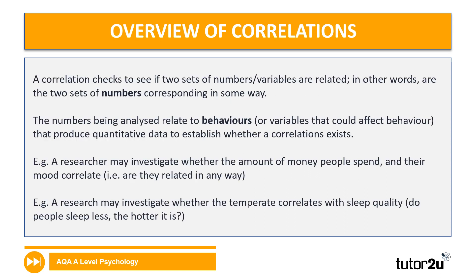A little bit of an overview of correlations. The purpose of a correlation is to see whether or not variables are related. In correlations, we use the term co-variables, whereas in experiments we use the term IV and DV. In a correlational piece of research, we have a set of numbers to analyse — these numbers relate to specific behaviours or variables that could affect behaviour — so we have quantitative data that allows us to establish whether or not a correlation exists.